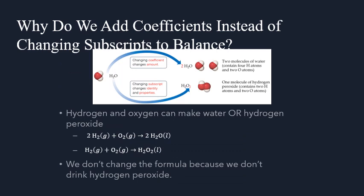When we change the coefficients, we're keeping the same substance and just changing the number of molecules or atoms so we can have the correct number of atoms of each element on both sides. If we change the subscripts, we change the chemical identity and properties of that substance, and it will no longer be the same chemical reaction. For example, hydrogen and oxygen can make water or hydrogen peroxide. For water, you have a ratio of 2 H2 to 1 O2 producing 2 H2O, whereas for hydrogen peroxide, you have 1 H2 and 1 O2 producing 1 H2O2. Hydrogen peroxide can be lethal if you drink it, whereas water is completely safe.